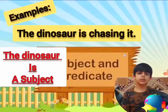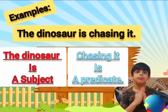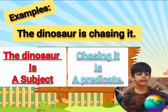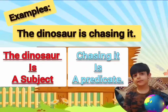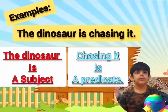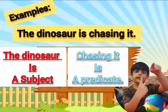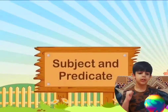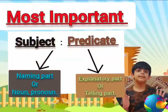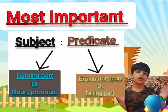The other part of the sentence is not a subject — guess what it is? It's a predicate. So in 'The dinosaur is chasing it,' the dinosaur is the subject, and 'is chasing it' is the predicate. Subjects are the naming parts, while predicates are the explanatory or telling parts.